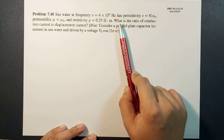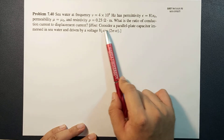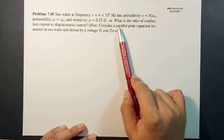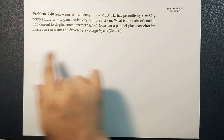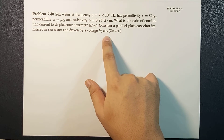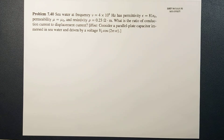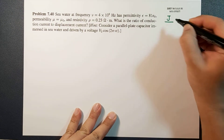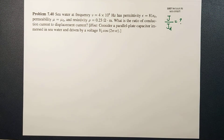The question is: what is the ratio of conduction current to displacement current? The hint says to consider a parallel plate capacitor immersed in seawater, driven by a potential V = V₀cos(2πνt). So our goal is to calculate the ratio j divided by jd.